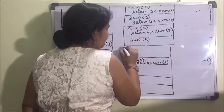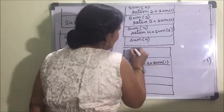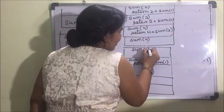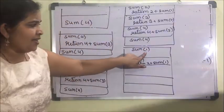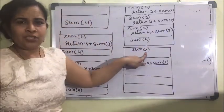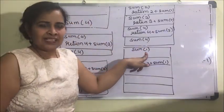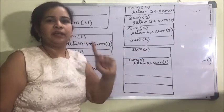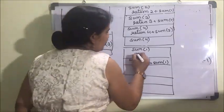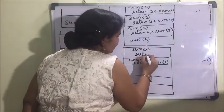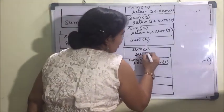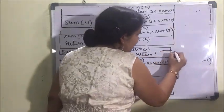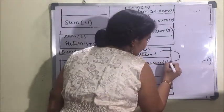Now n has reached the base case — it will return 1. So sum(1) returns 1, and that value is passed back to the statement from where the function was called.